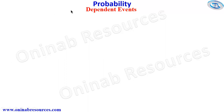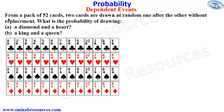So we take our problem. From a pack of 52 cards, two cards are drawn at random one after the other without replacement. What is the probability of drawing: A, a diamond and a hat; B, a king and a queen?